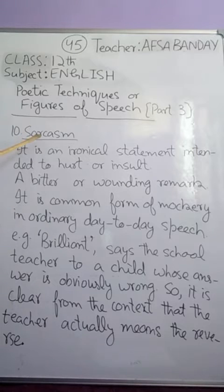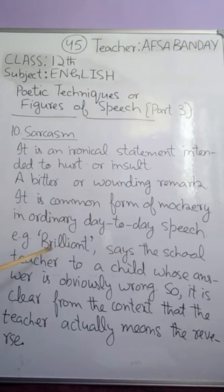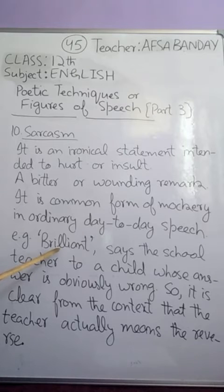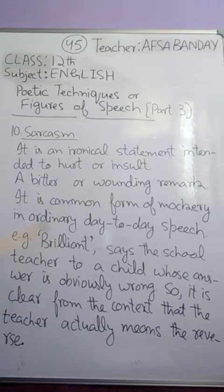The next poetic device is sarcasm. It is an ironical statement intended to hurt or insult — it has a surface meaning, but we actually mean the opposite. It is a bitter or wounding remark, a common form of mockery in ordinary day-to-day speech. For example, a teacher, to a child whose answer is obviously wrong, says 'brilliant.' The teacher doesn't actually mean brilliant — the answer is wrong, so the actual meaning is quite opposite. That is sarcasm: the surface meaning is something, but the person means the opposite, and it is intended to hurt or insult.